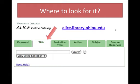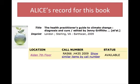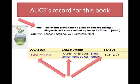Choose the title tab, then enter the title, and click on the search button. Here is part of Alice's record for the book. The top part, containing author, title, and publication information, describes the book as it exists in the world. The second part, in the colored box below, gives indication about our copy of the book. You need to note and record both the location and the call number.